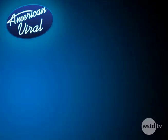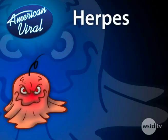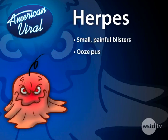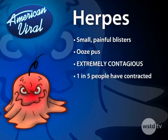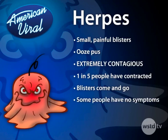Our second contestant comes straight to you from your genitals, your mouth, and even your eyes. That's right, it's herpes. Herpes usually comes with a bonus gift: a small, very painful blister that, when popped, oozes a bit of pus. With or without the blister, and regardless of whether the blister has been popped or not, herpes is extremely contagious. As many as one in five people have contracted herpes. Just like HPV, you can't tell by looking because the blisters go away for a while. But they'll be back, and some people never have symptoms at all. That doesn't stop Mr. Painful Blister from coming to some genitals near you.